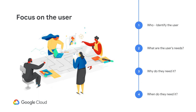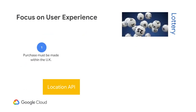A lottery company in the UK wanted to make purchasing a lottery ticket easy for their players. Their goal was to give everyone the ability to make a purchase anytime, anywhere. However, there were some regulations that needed to be met before the player could purchase the ticket. First, the purchase of a lottery ticket must be made from within the UK. This requires that the application be able to geolocate the player.